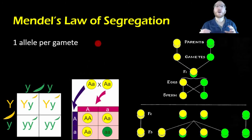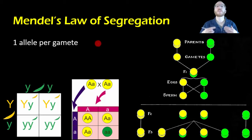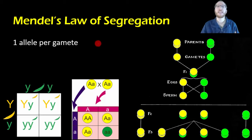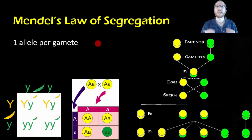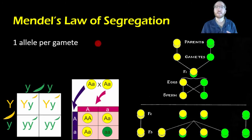Mendel took all this information, synthesized it, and tried to come up with something to explain dominance and recessive — to explain this 3 to 1 ratio he sees in the F2 generation every time for each of the 7 traits he looked at. And so he came up with two laws that did a pretty good job of explaining genetics as we know it even today.